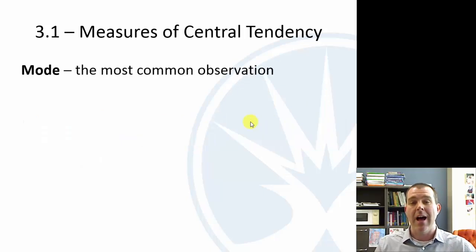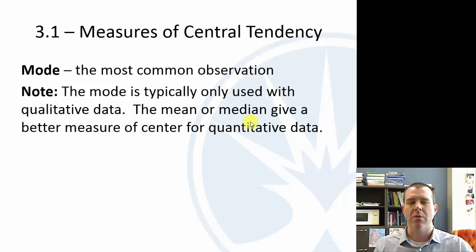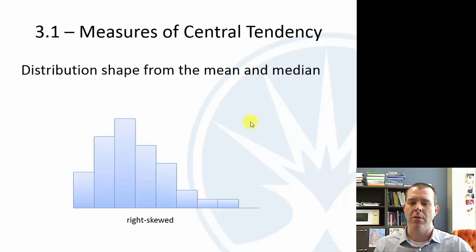The mode is just the most common observation. We typically only use this for qualitative data. When we have quantitative data — numbers — we use the mean or the median.